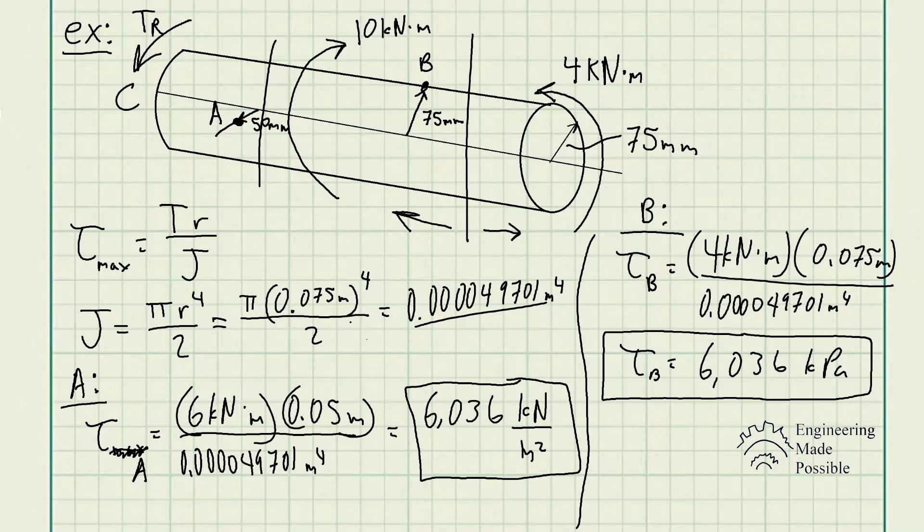So, this is how you solve for the shear stress within a rod when a rod is experiencing torsion or a torque such that it wants to twist the rod itself. Now, the only thing that could be a little bit more challenging here is to actually find, such as this, you're dealing with a system with multiple torques being applied.